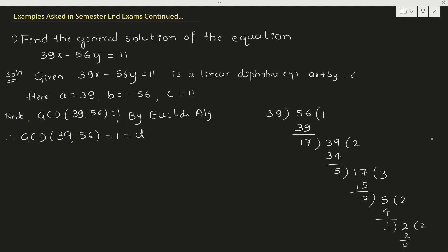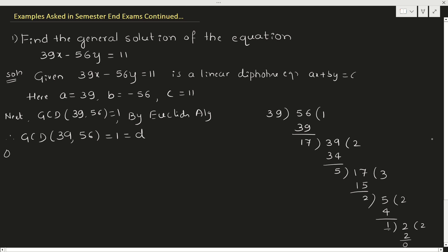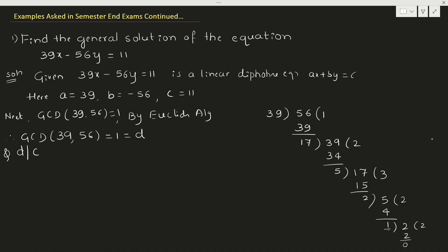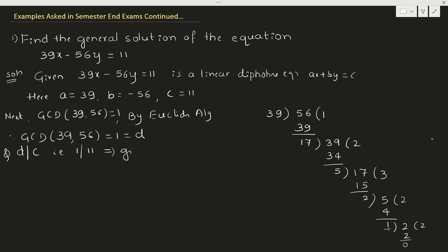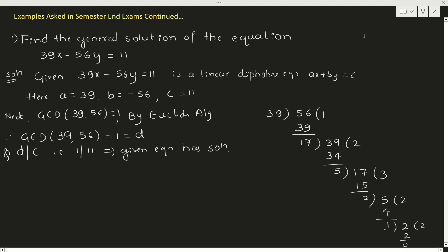The condition says the given equation has a solution only if d must divide c. Here d is 1 and 1 divides 11, so this implies the given equation has a solution. Then only we can proceed further.